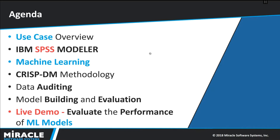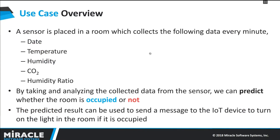Let's have an overview on the use case. The data used for this use case is collected from a sensor kept in a room. The sensor collects information every minute about temperature, humidity, carbon dioxide levels, etc. We have built a model using this data and predicted whether the room is occupied or not. Based upon the predictions, we sent a message to an IoT device to turn on and turn off the light based upon the occupancy, thereby saving power. For this use case, we will be building a predictive model in this video.